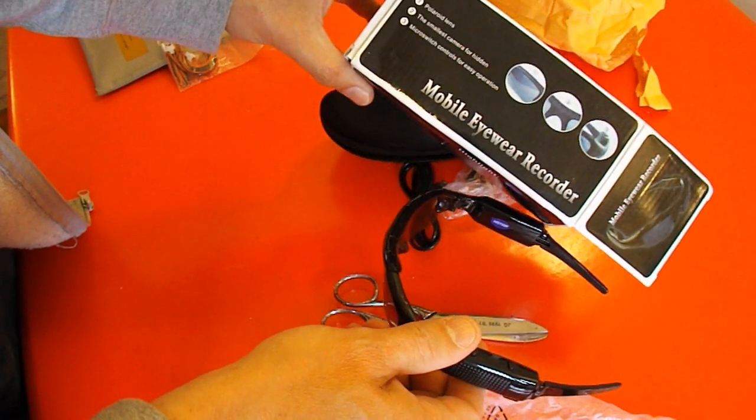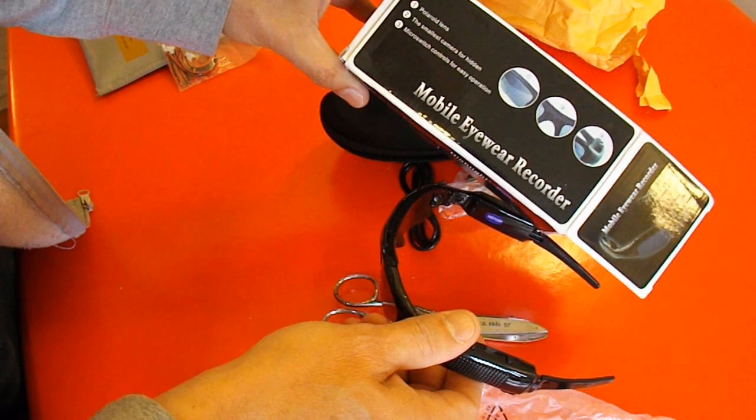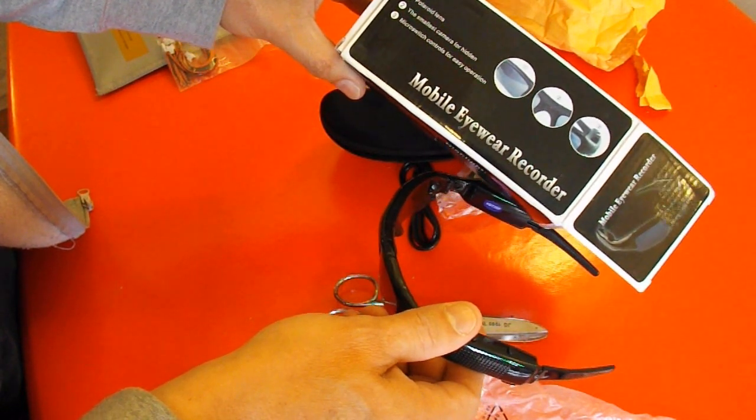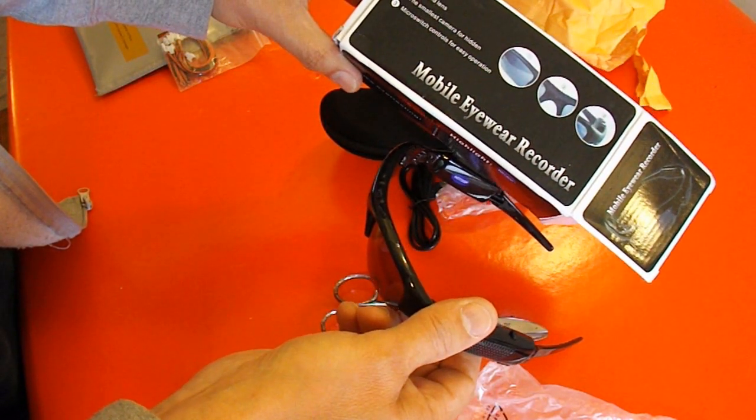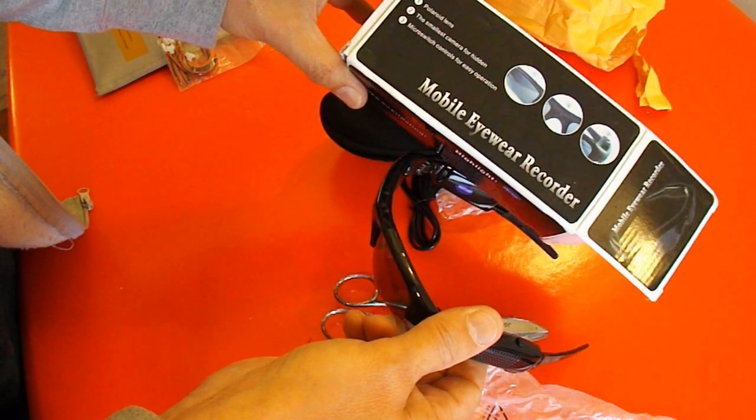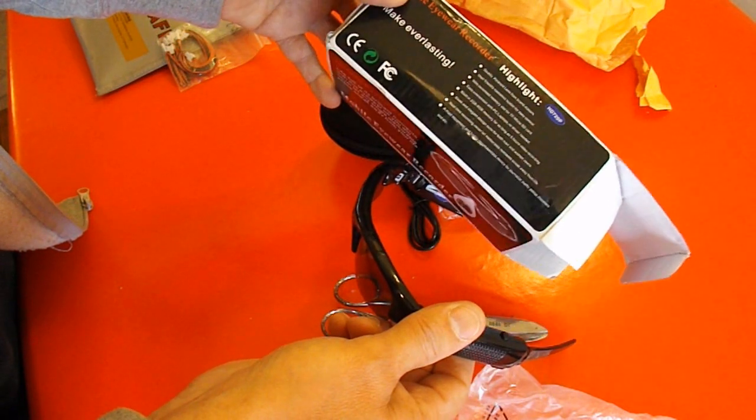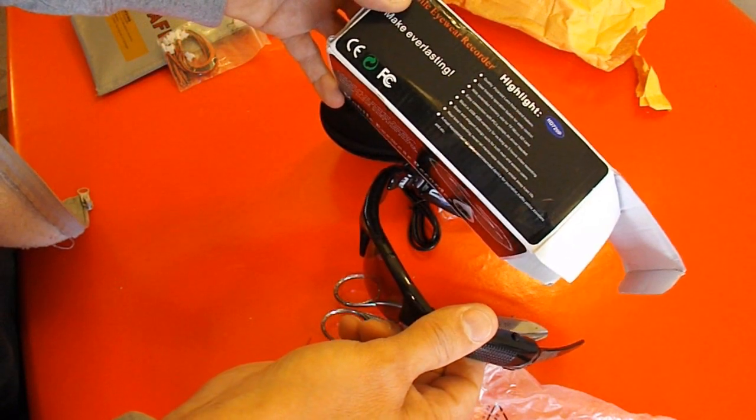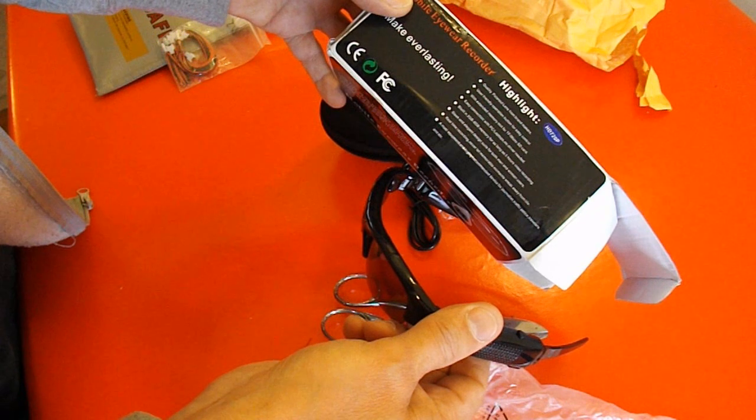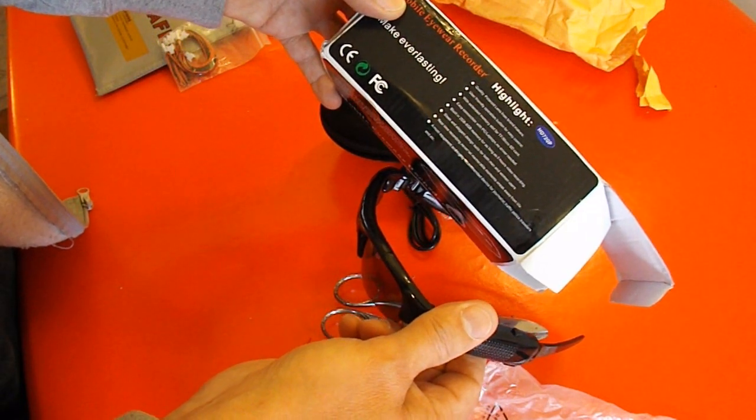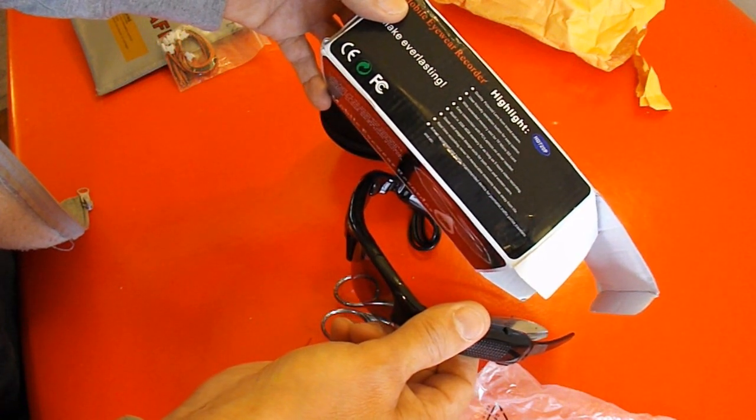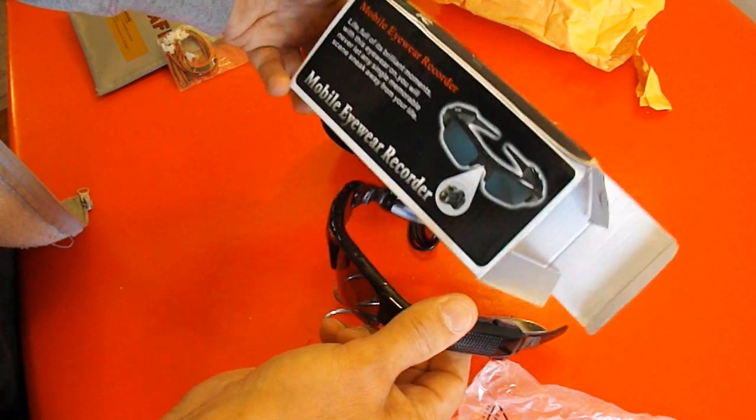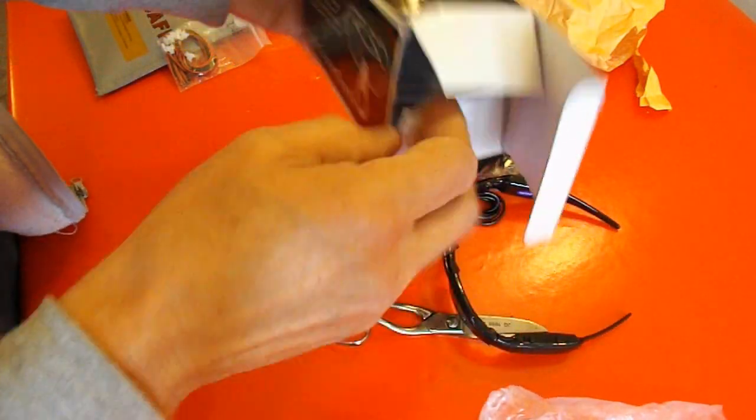Polaroid lens. Smallest camera for hidden. Well, I just want it for taking pictures of my planes when I'm trying to fly them. Micro switch controls for easy operation. Micro SD card. There are some instructions.